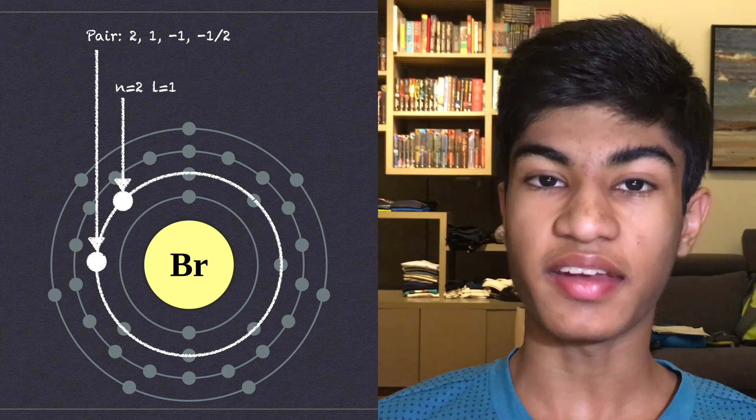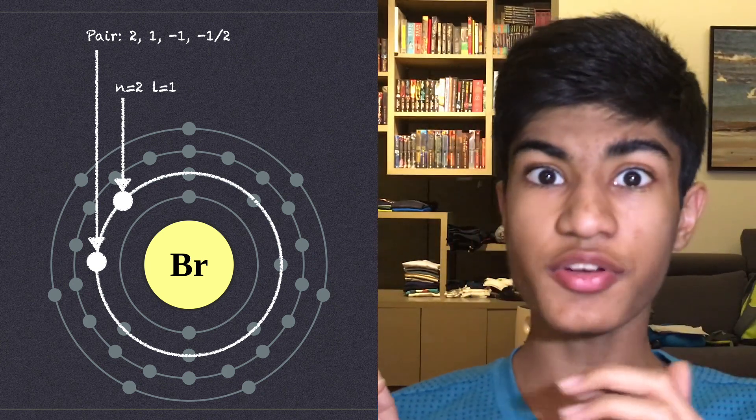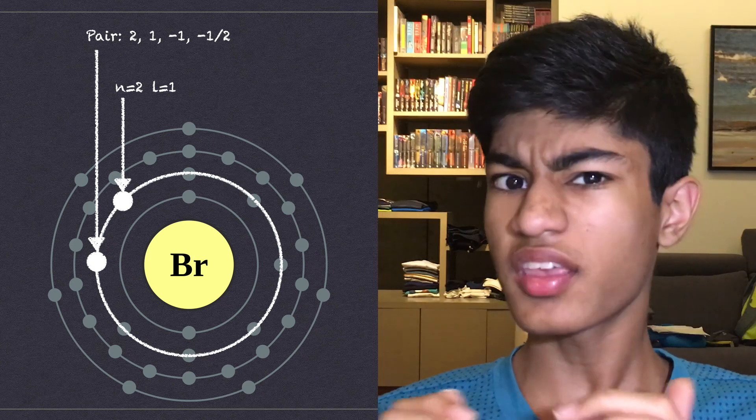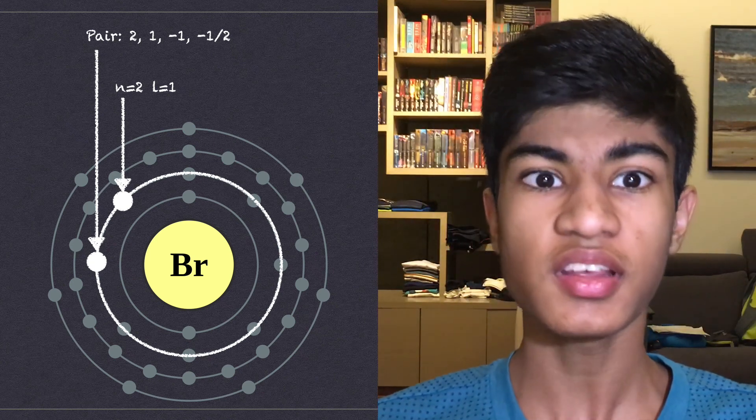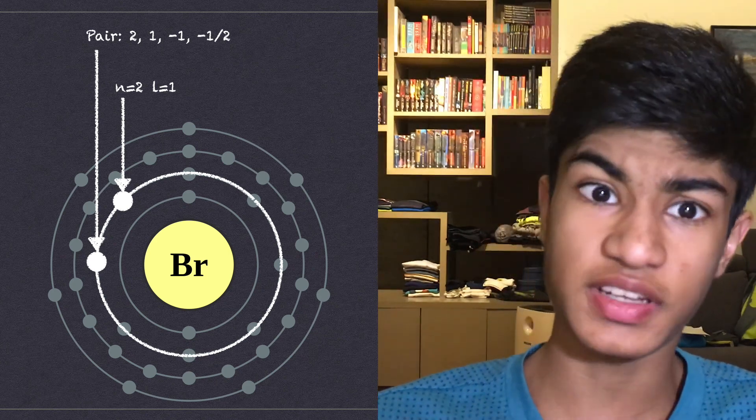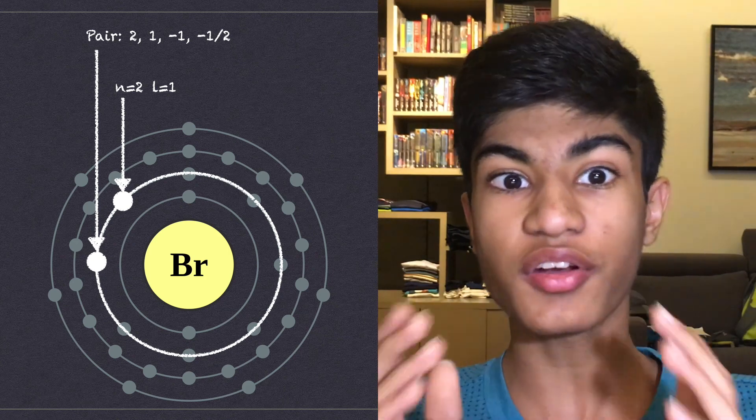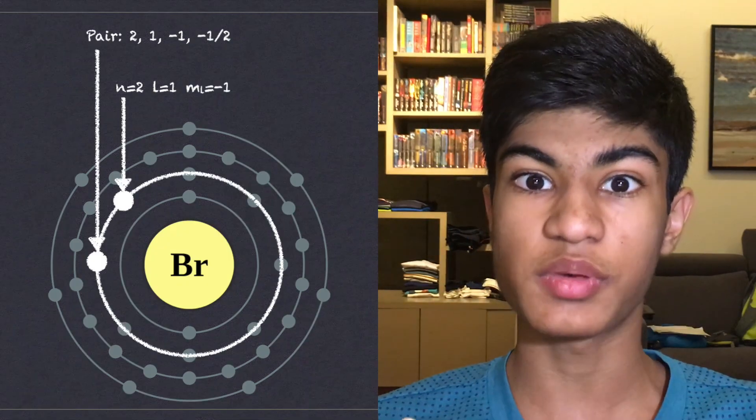Now ML, the magnetic quantum number. As I said before, it's minus L to plus L, giving us a range of minus 1 to plus 1. There is no way of knowing which orbital the electron is in using Bohr's model of the atom, which is why having the pair's value really cleans things up. As the pair's magnetic quantum value is minus 1, our electron's magnetic quantum value will also be minus 1.